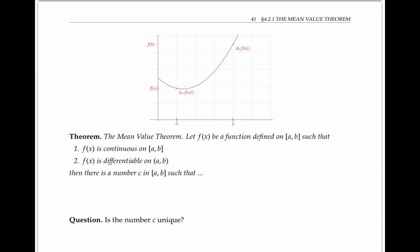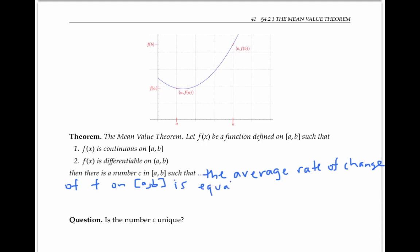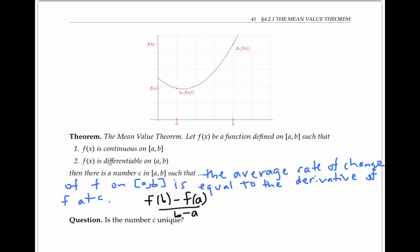Then the mean value theorem says that there must be some number C in the interval [a, b] such that the average rate of change of F on [a, b] is equal to the derivative of F at C. In symbols, we can write the average rate of change as F(b) minus F(a) over b minus a, and that has to equal F'(C) for some number C.